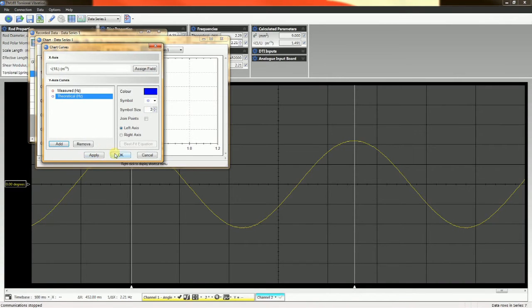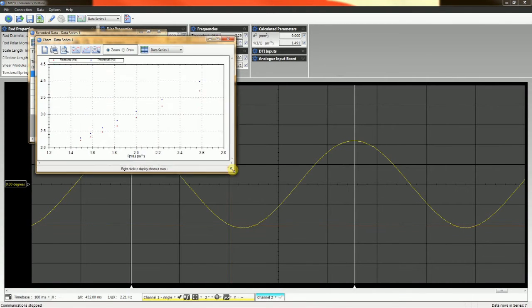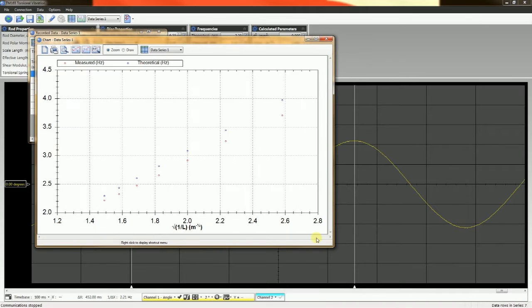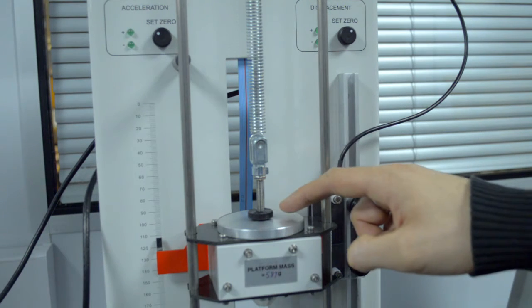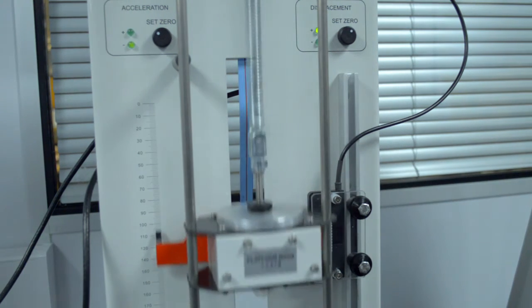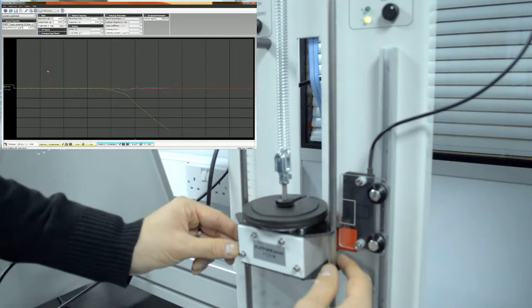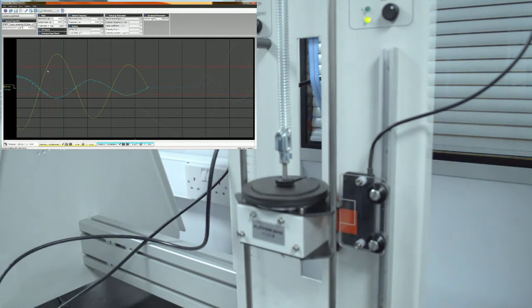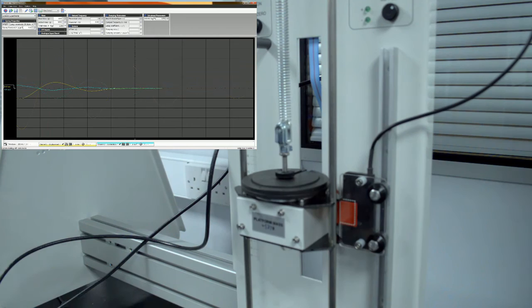These modules use VDAS Mark II hardware and software to both visualize and analyze the motion on a PC. The TM164 uses a tension spring attached to a mass. Real-time measurements come from a non-contacting position sensor and an integral accelerometer.